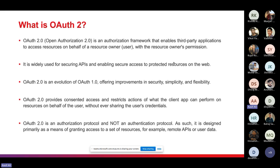OAuth2 provides consented access and restricts what the client application can perform on resources on behalf of the user, without over-sharing the user's credentials — instead asking the authorization server whether the user is permitted to do a specific action. It is an authorization protocol, not an authentication protocol. It is designed primarily as a means of granting access to a set of resources, such as remote APIs or user data.